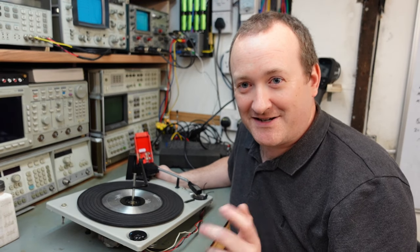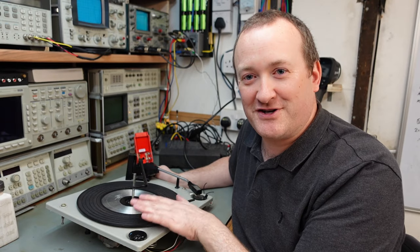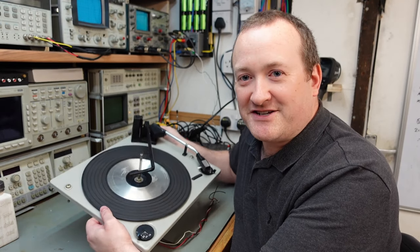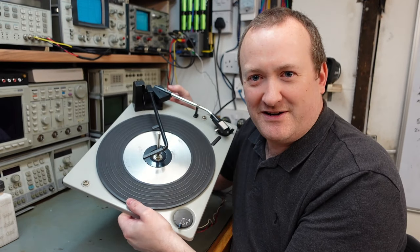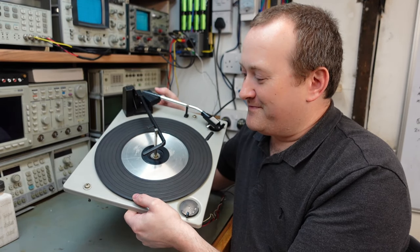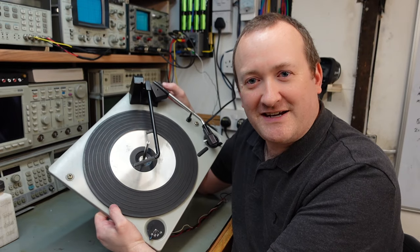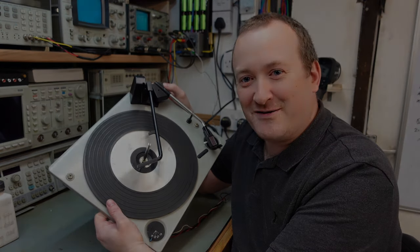Now we've finished the record player case, I can spend some time on the actual turntable itself. This BSR UA15 deck from the late 60s, when we tested it, didn't even rotate so there's something quite wrong.